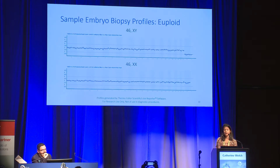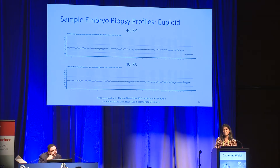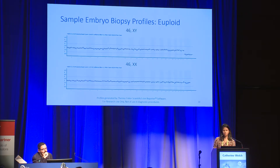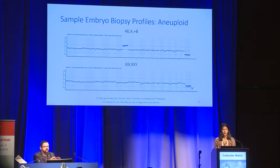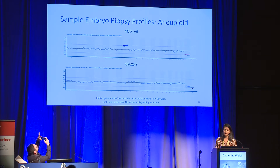Here are a few sample embryo biopsy profiles. We make an effort to be clear that these are embryo biopsies and samples, not necessarily the whole embryo. We see 46XY and 46XX across the board for euploid samples, and a couple of aneuploid profiles — a gain of chromosome 8 with a loss, and a triploid 69XXY. To call triploidy, you do have to be using the mosaic workflow; otherwise, 69XXY would likely be called as 46XY because the software rounds to the nearest integer.